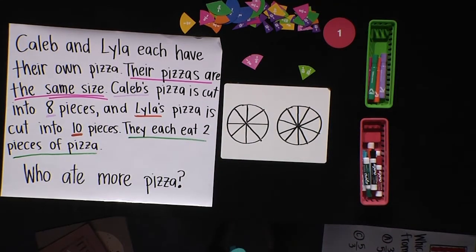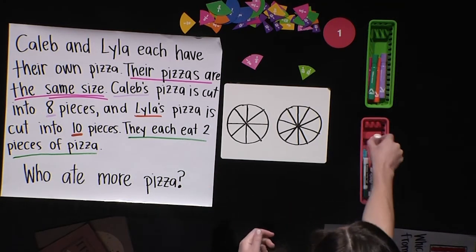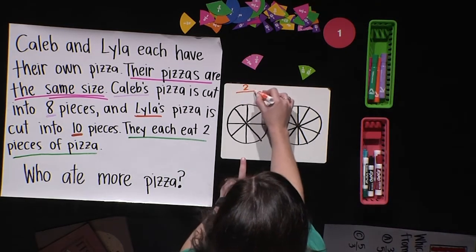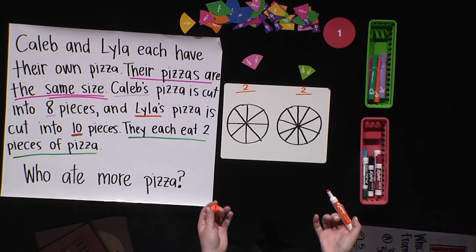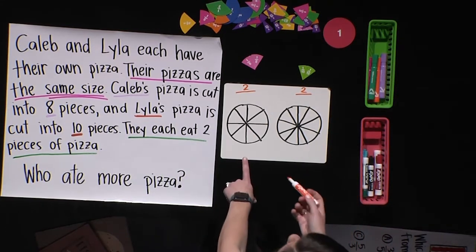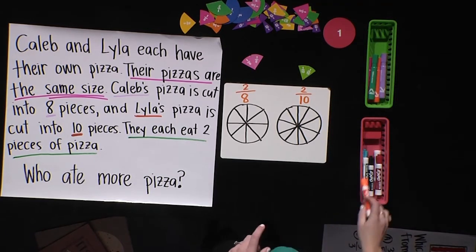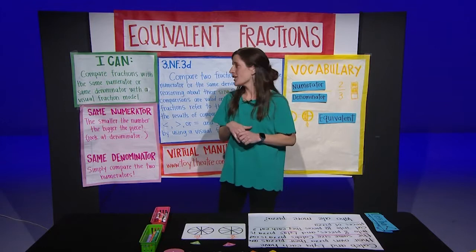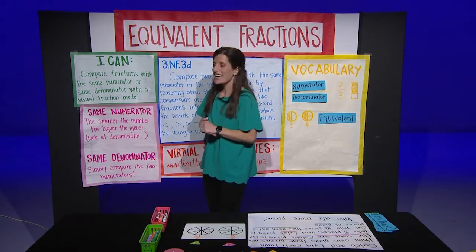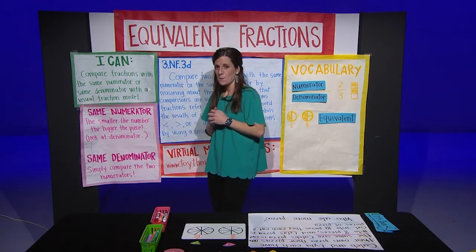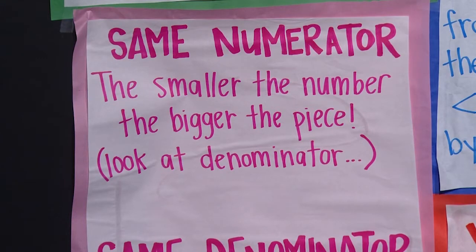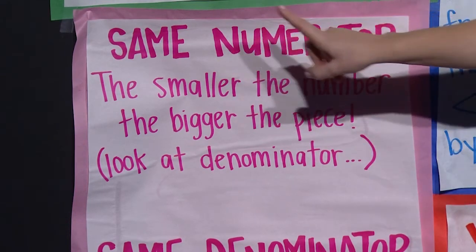When you look at those two fractional pieces, what is something that you notice? Some of you may notice that each of them ate two pieces, which means their numerator was two. However, their total or their denominator is different — Caleb had eight pieces, and Lila had ten. Let's look up behind me. I notice that on my chart here in pink, when we have the same numerator, there's a little chant we can do: the smaller the number, the bigger the piece. And then you can switch it up: the bigger the number, the smaller the piece. This is with the same numerator.